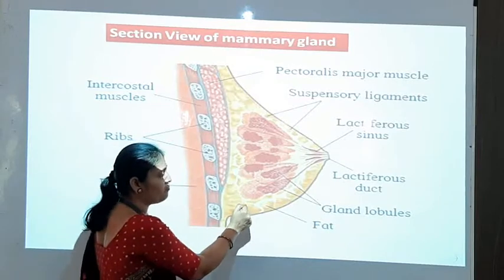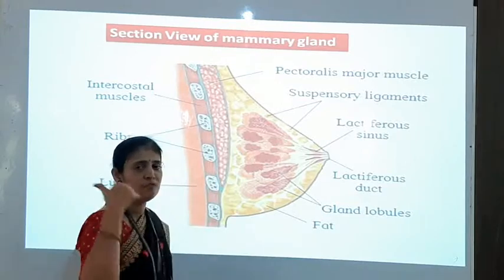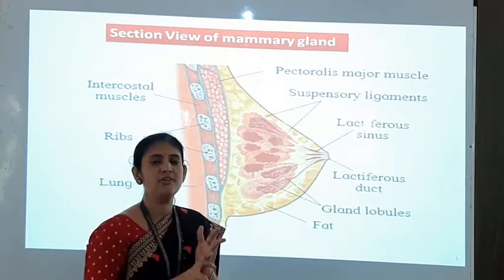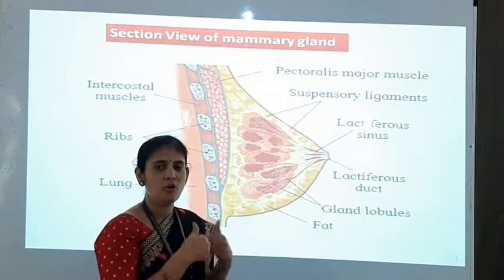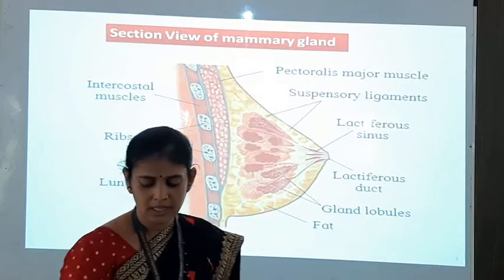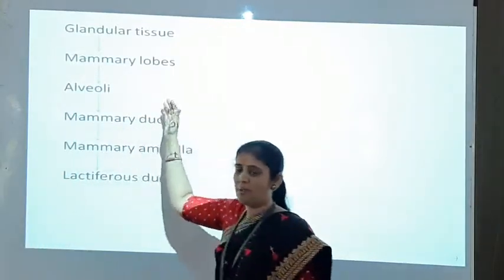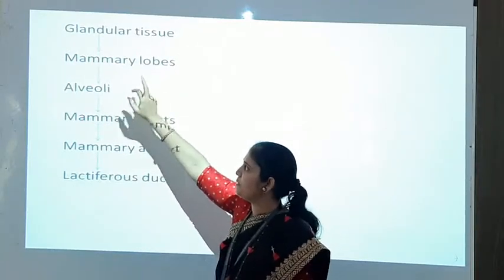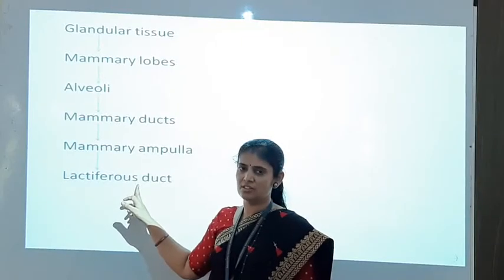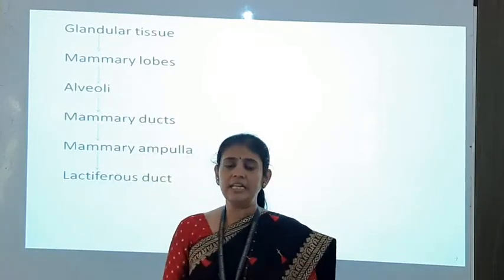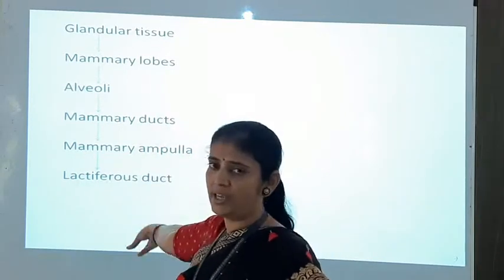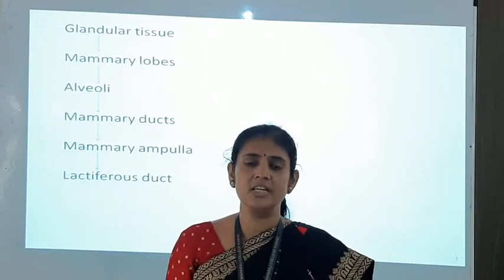To summarize: the mammary gland consists of fatty tissue and glandular tissue. Glandular tissue has mammary lobes; mammary lobes consist of alveolar cells and lactiferous tubules. Lactiferous tubules secrete milk stored into the alveoli; from alveoli to mammary duct; from mammary duct to mammary ampulla; and from mammary ampulla to lactiferous ducts. This pathway of milk secretion and release from one part to another in the mammary gland is important for exams.